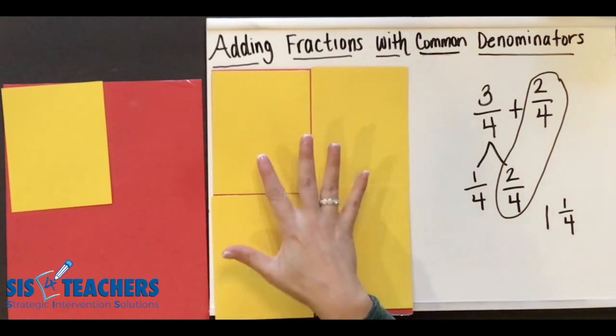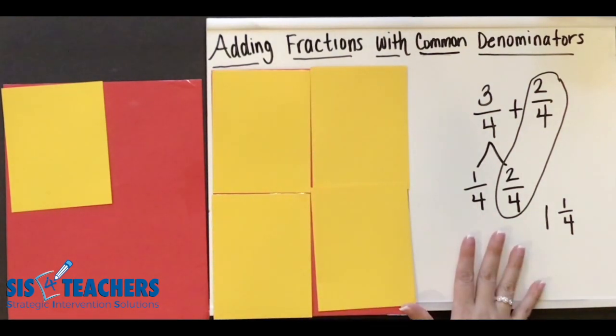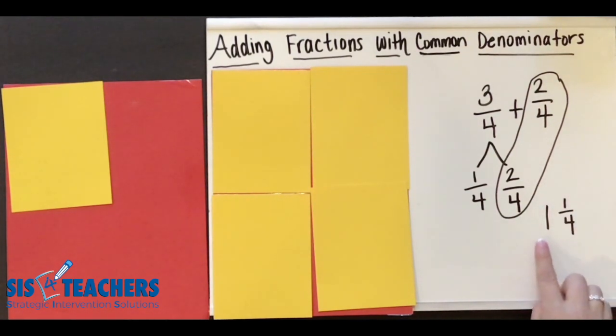When students don't feel like they need the manipulative to do this, they can just use DC strategy to help them. In some ways, it eliminates the step of finding the fraction that's larger than one and then having to decompose it into a mixed number. If you're needing help with that, you can also watch our other YouTube video on how to change a fraction larger than one into a mixed number.